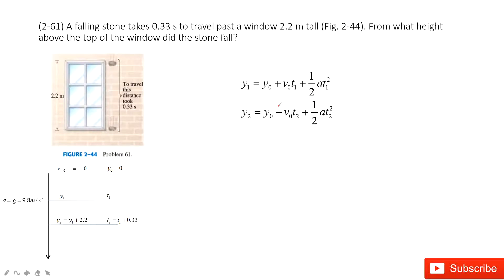y0 is 0 and v0 is 0. So the a is g. We can get y1 in this one, y2 in this one.